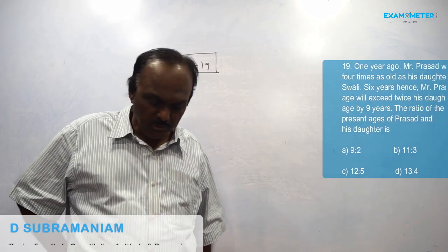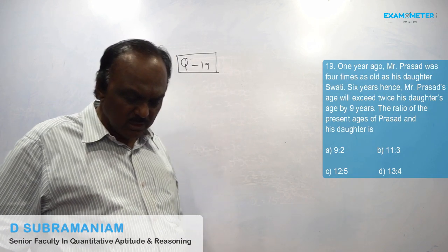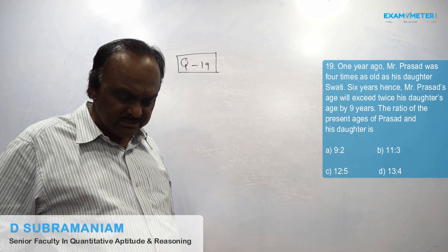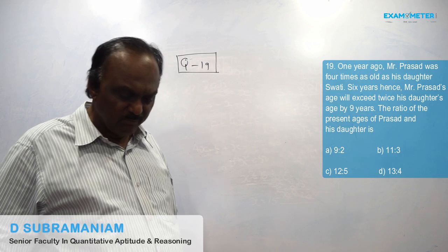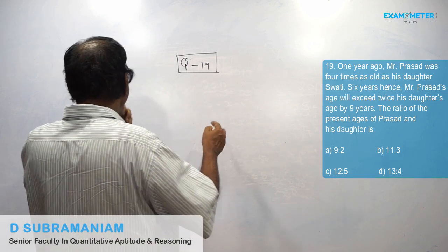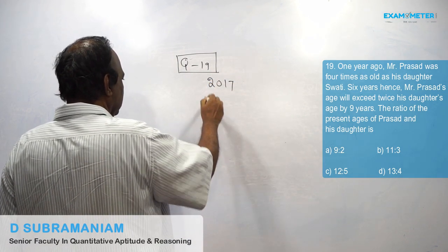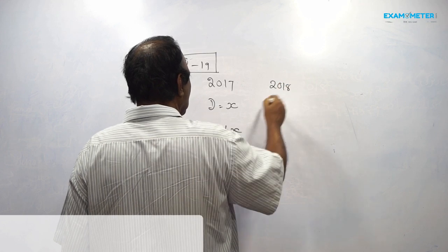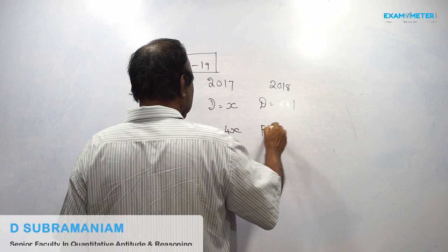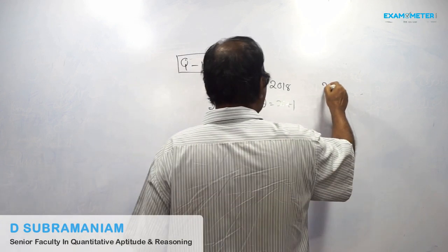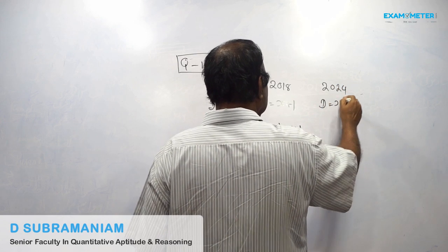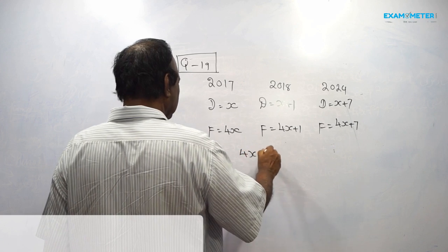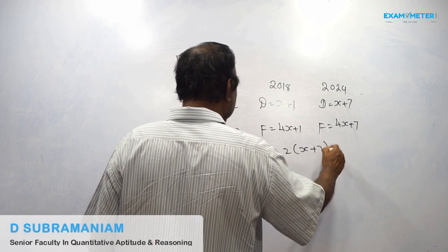Nineteenth question. One year ago, Mr. Prasad was four times as old as his daughter. Six years hence, Mr. Prasad's age will exceed twice his daughter's age by nine years. Find the ratio of the present ages of Prasad and his daughter. One year ago, daughter is x, father is 4x. Now, daughter is x plus 1, father is 4x plus 1. After 6 years, daughter is x plus 7, father is 4x plus 7. So 4x plus 7 is equal to 2 into x plus 7, plus 9.